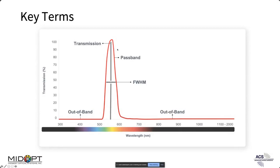The transmission curve has a pass band — that's where a bandpass filter gets its name, because it indicates what part of the wavelength is being allowed through. The out-of-band refers to what's being blocked. Transmission tells you how much of a particular wavelength is being let through. The full width half max refers to how wide that pass band is, which matters depending on whether you're using a broadband LED source or something like a laser.